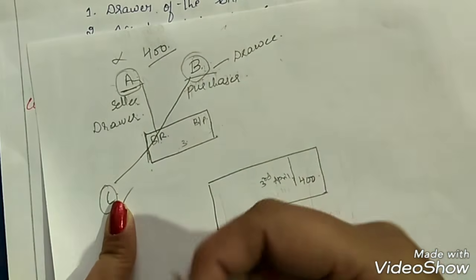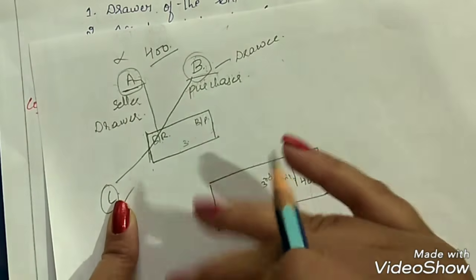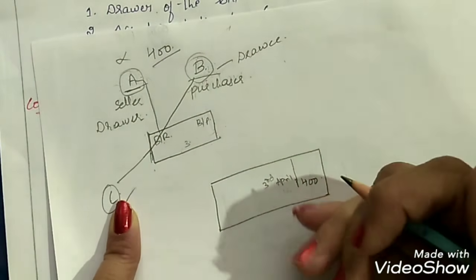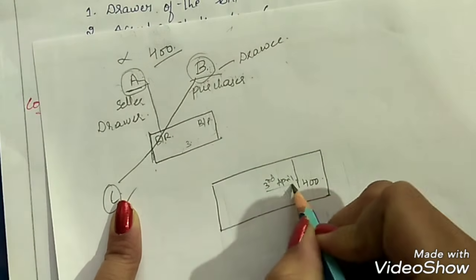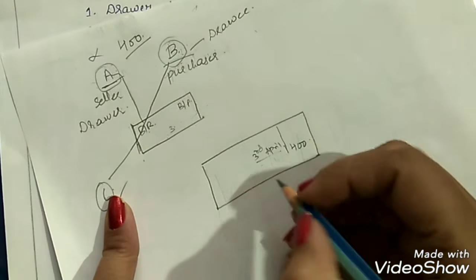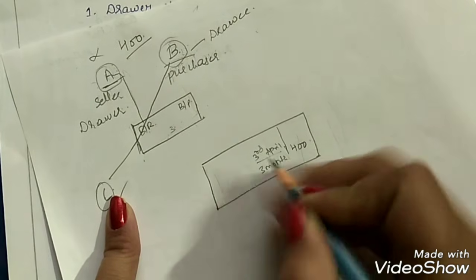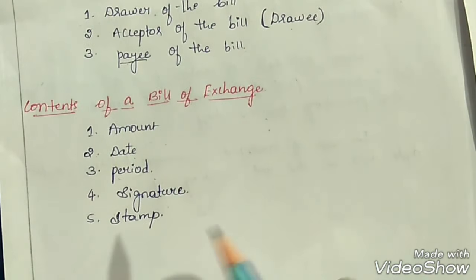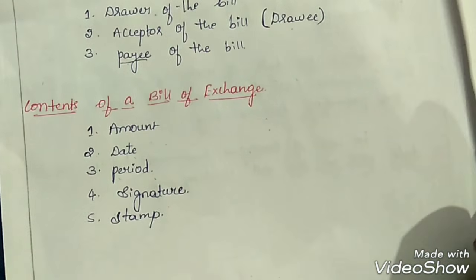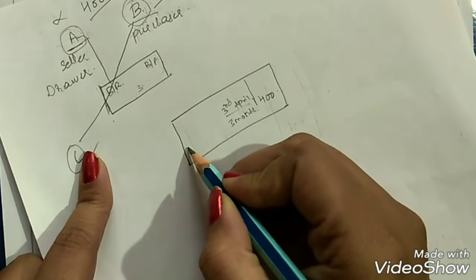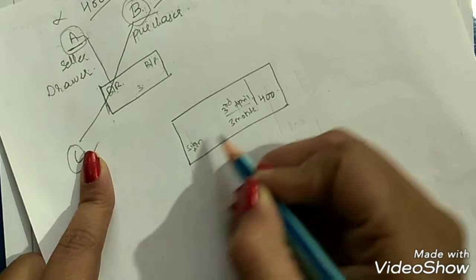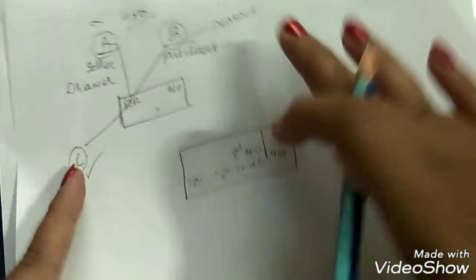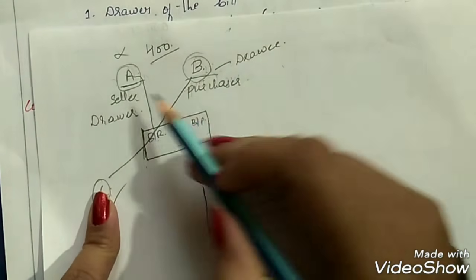Third is the period — the term of the bill, which is how long the bill is valid. This is decided by both parties. B may say he needs three to four months; if they fix it at three months, then the term is three months. B will make payment after three months, so the date will be 3rd April, and the bill is valid for three months.